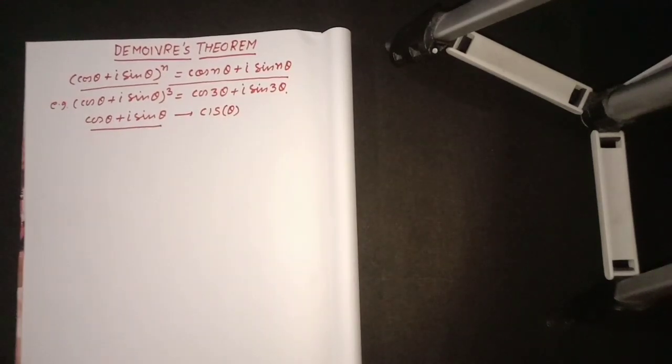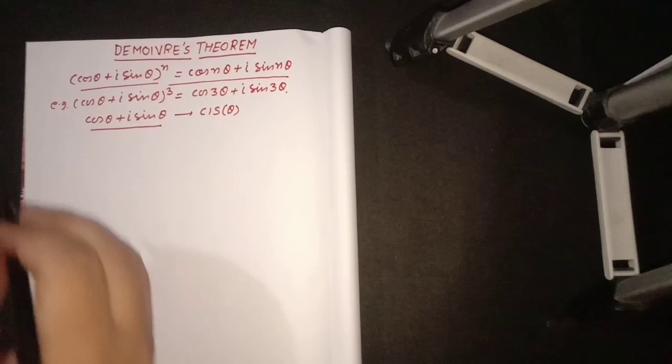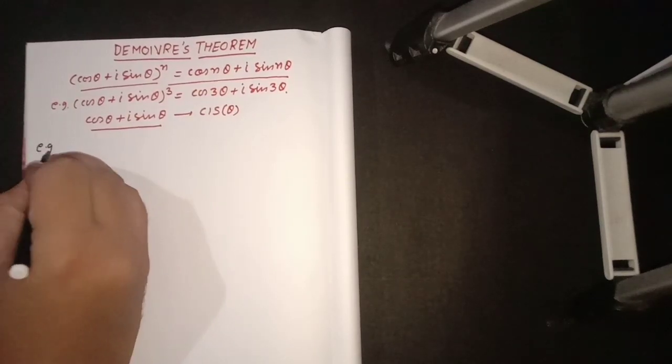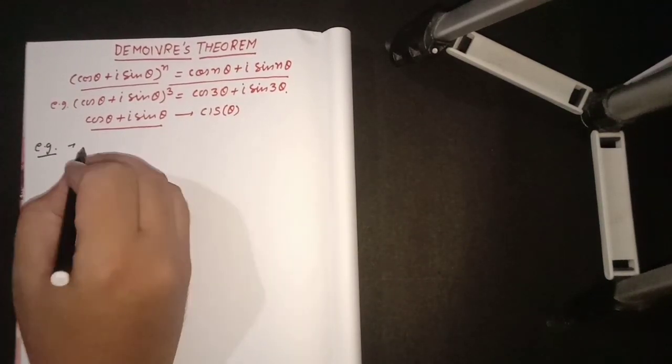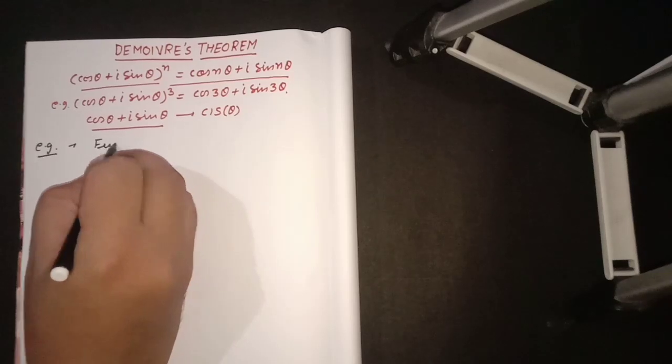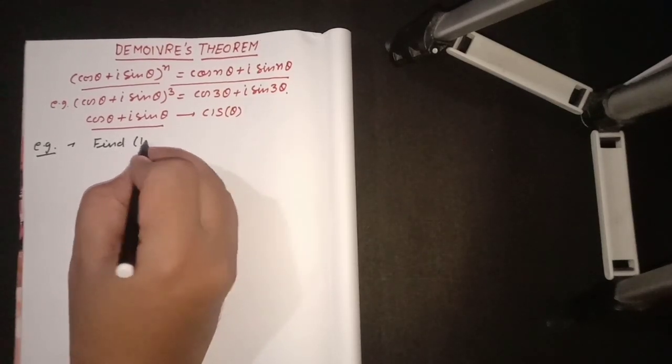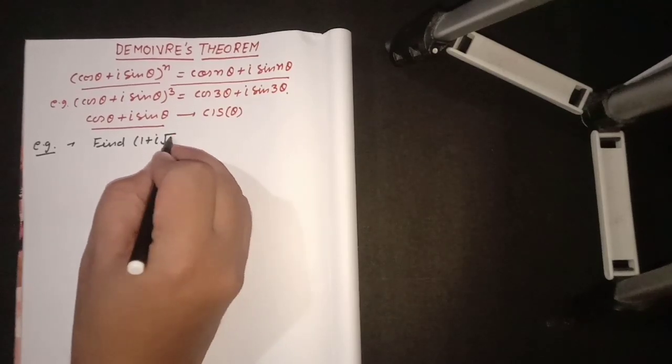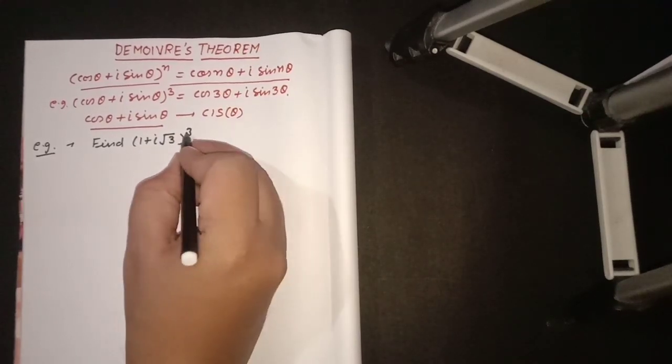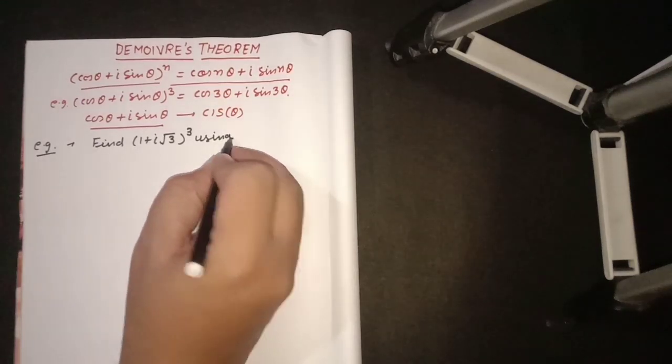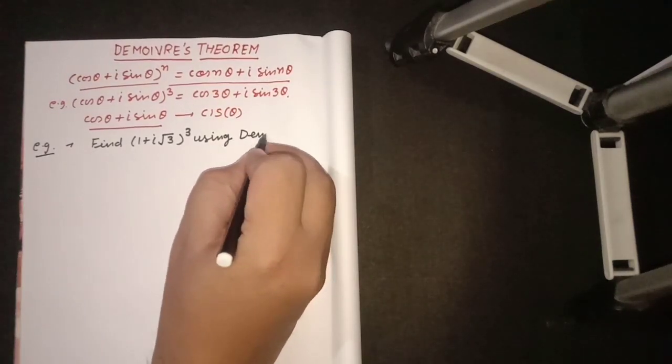Now how can we use this in numericals? So, for example, find (1 + i√3) whole cube using DeMoivre's theorem.